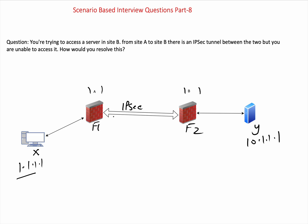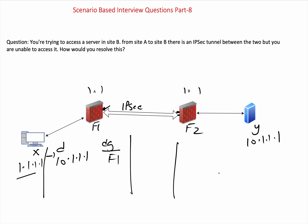Let's now deep dive into the routing part. You need to see that for destination 10.1.1.1, the default gateway is the firewall F1 — specifically F1's exit interface IP. And for destination 1.1.1.1, the default gateway is also F1's IP. That is how the packet will travel.